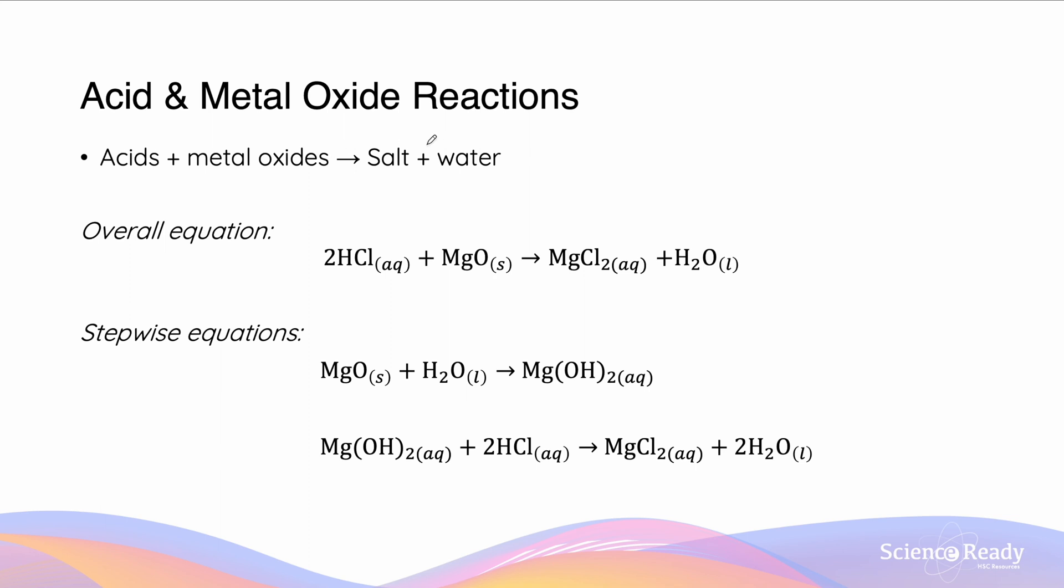Acid and metal hydroxide is going to form salt and water. Our overall equation is hydrochloric acid and in this example magnesium oxide is going to form magnesium chloride and water.